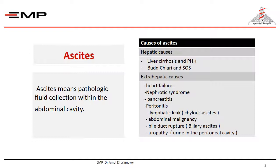On the other hand, there are a lot of extrahepatic causes of ascitis. Ascitis may be part of generalized anasarca in heart failure and nephrotic syndrome, may be due to peritonitis — whether infectious as in TB peritonitis, or as part of polyserositis in collagen disease. It could be due to lymphatic leak, as in case of trauma, post-abdominal operations, or congenital anomalies of the lymph vessels.